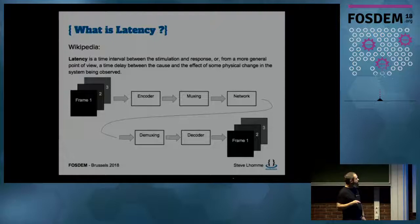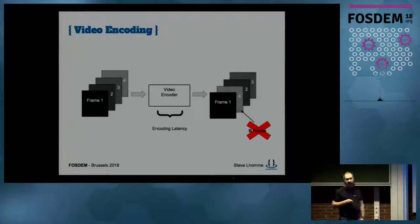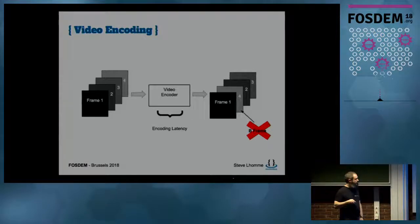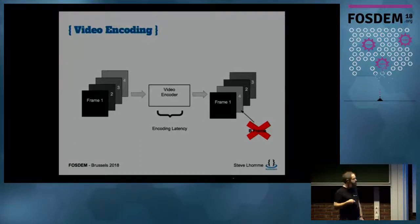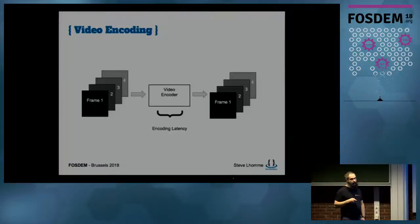For video encoding latency: frames 1, 2, 3, 4 come from the camera and go through the video encoder. When you have something pre-recorded, the codec can encode frames in a different order than received for better coding efficiency. But for live streaming you don't want that — you don't want frames appearing very late. So for live streaming you have to put your encoder in a mode that always sends pictures in the same order.